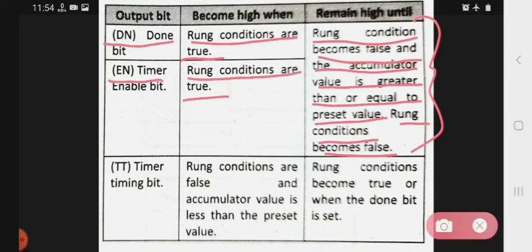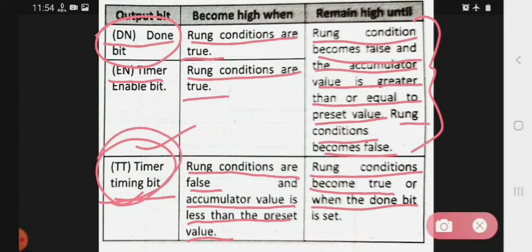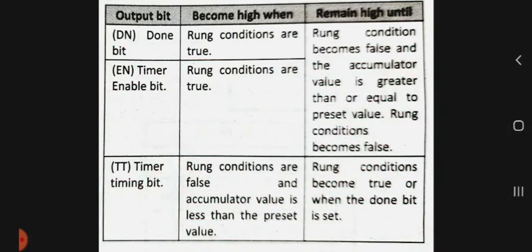Next, let's look at the TT bit, that is the timer timing bit. The TT bit is high when the rung condition is false and the accumulator value is less than the preset value. It remains high until the rung condition becomes true and the done bit is set. So the TT bit stays high while the timer is actively counting down after the rung goes false.